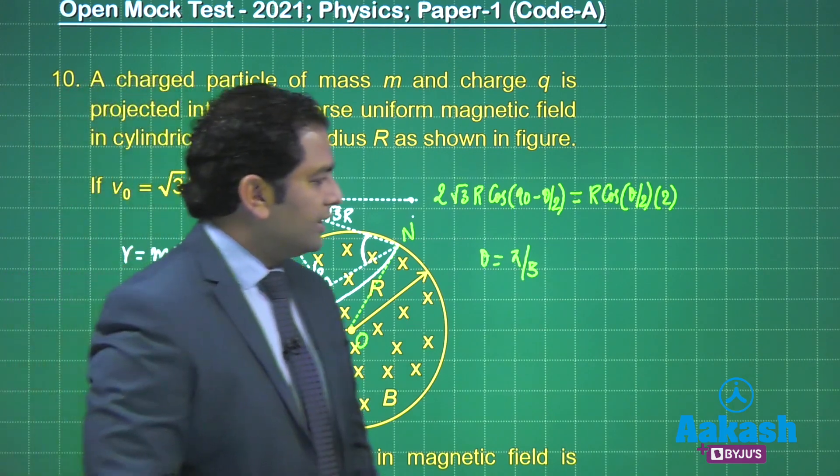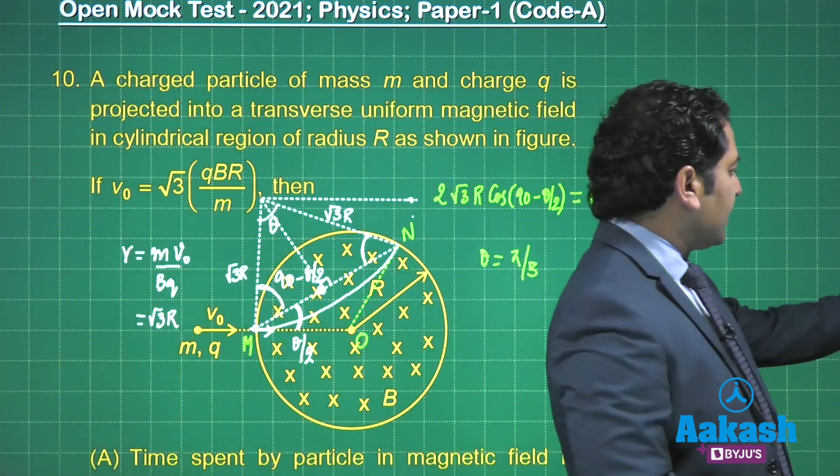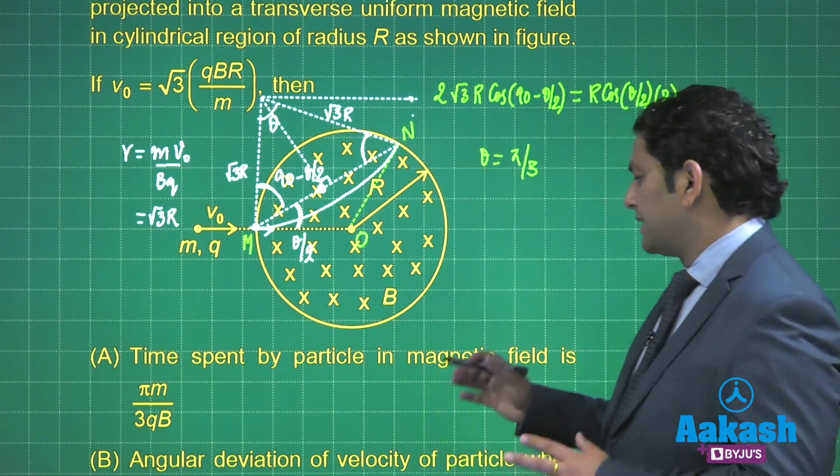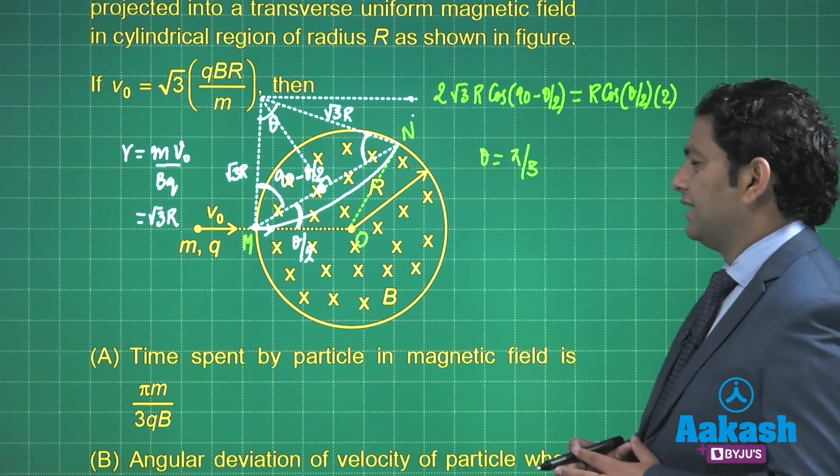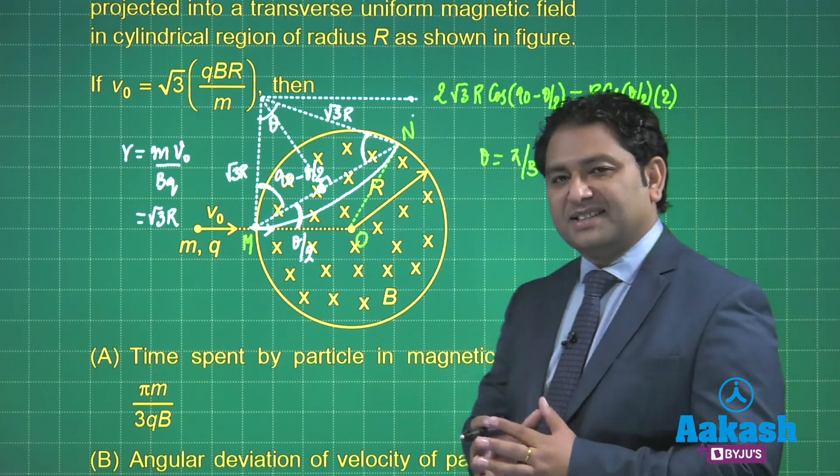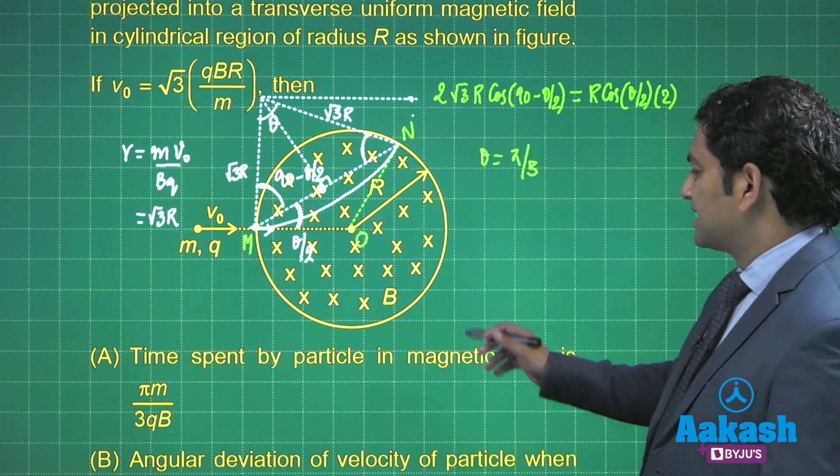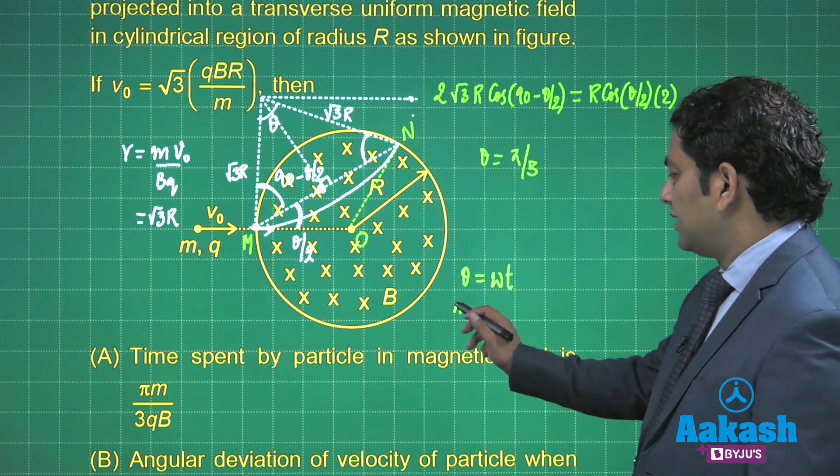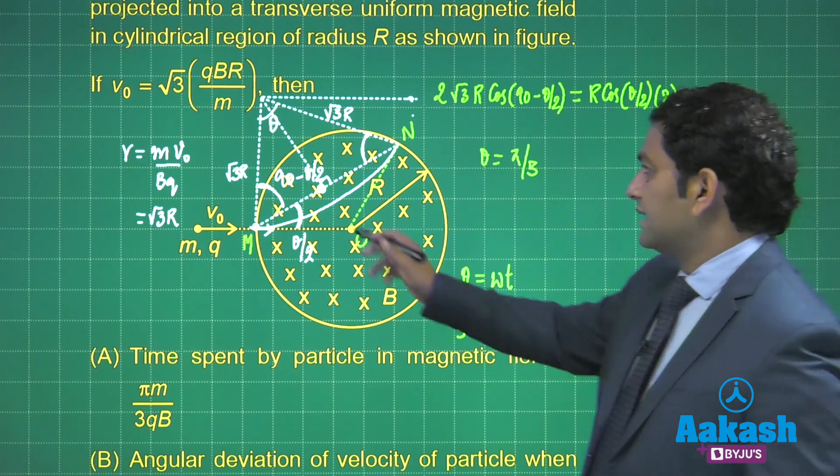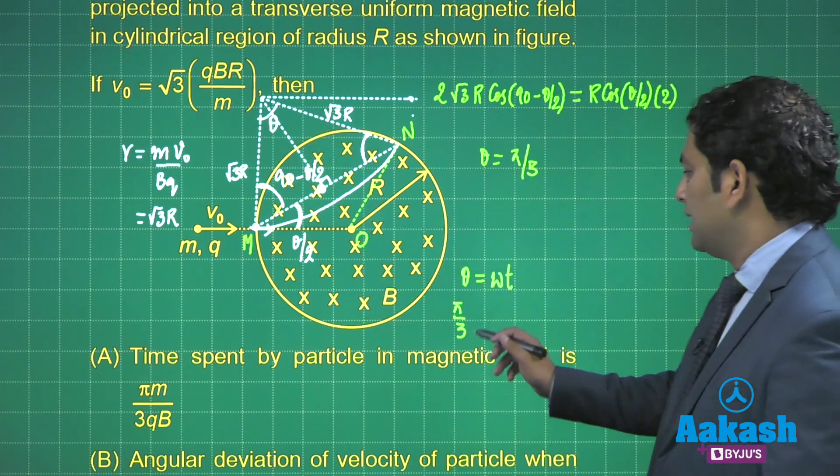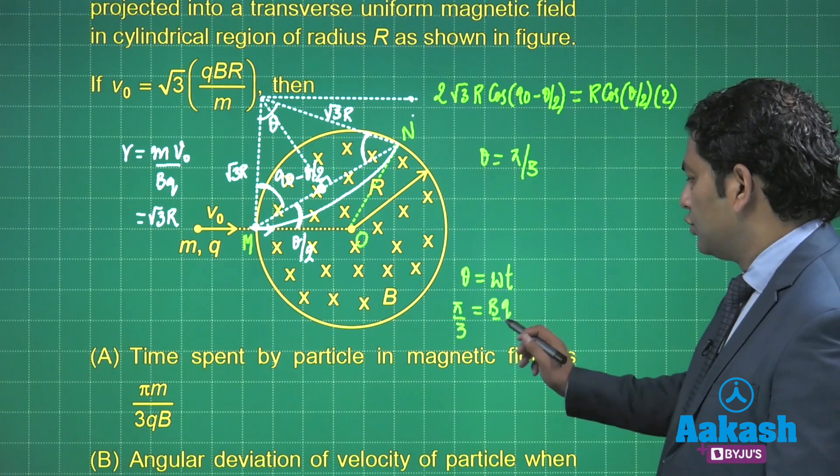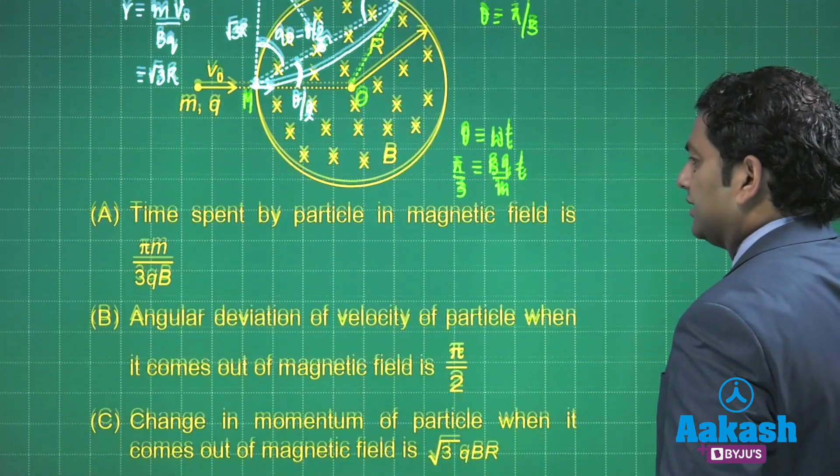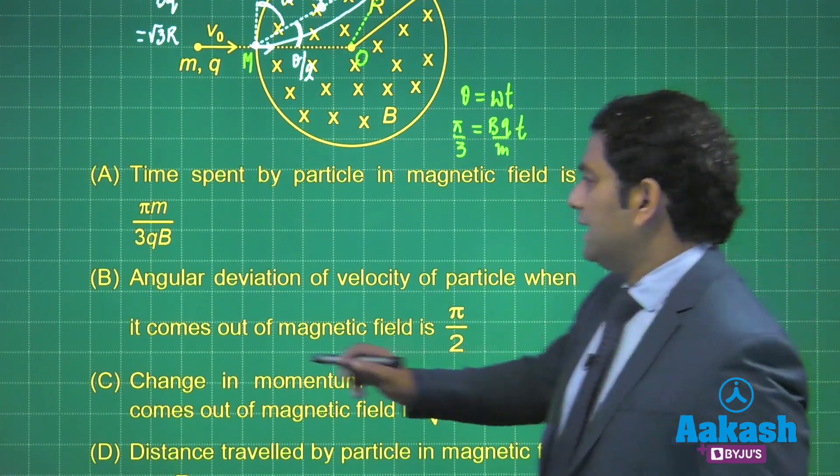Now after that, after we calculate this thing, let us try to understand the time spent by the particle in magnetic field. Now I think we can easily do that. How do you use the expression? θ equals to ω multiplied by T. θ is π by 3, because that is the total deviation. And ω is of course Bq by m multiplied by T. And when you solve that, you are going to get option number A is correct.